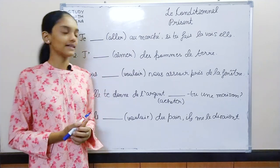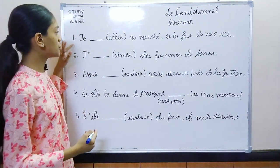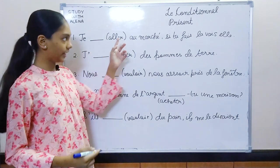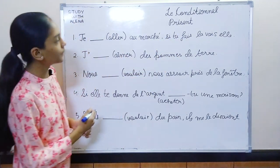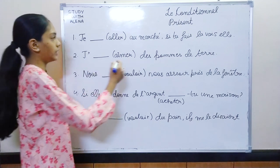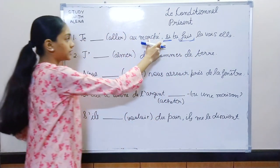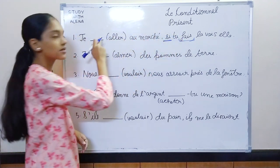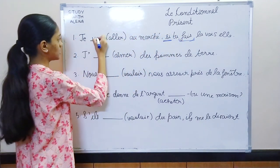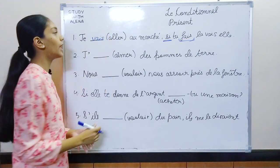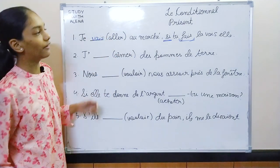Let's do some exercises. First one: je dash aller au marché, si tu fais la vaisselle. We have si and fais is in present — so here we can put present. Answer: je vais aller au marché, si tu fais la vaisselle.